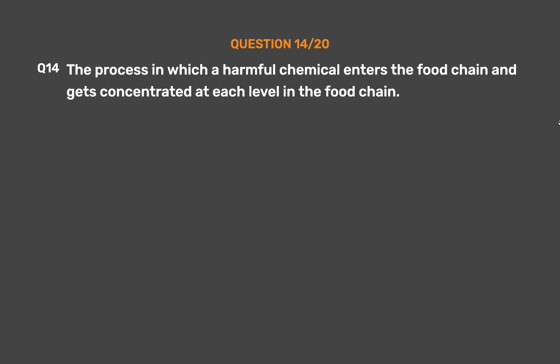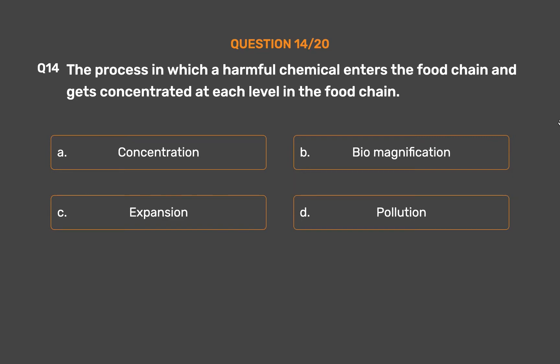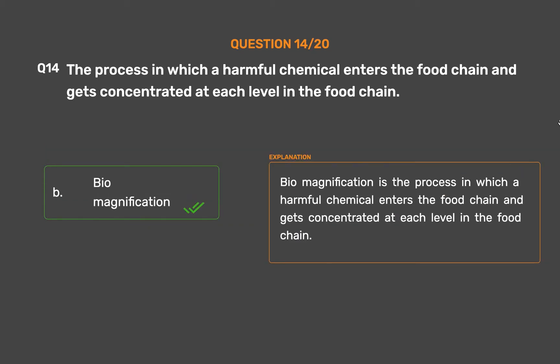Question number 14: The process in which a harmful chemical enters the food chain and gets concentrated at each level in the food chain — Option B: Biomagnification, Option C: Expansion, Option D: Pollution. The correct answer is Option B, Biomagnification. Biomagnification is the process in which a harmful chemical enters the food chain and gets concentrated at each level.